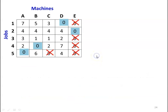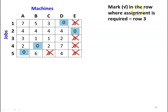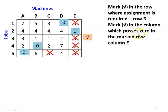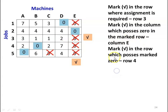Now we go to the next iteration. We repeat the matrix. Mark a tick in row 3 where assignment is required. Mark a tick in column E which possesses a zero in the marked row. Mark a tick in row 4 which possesses the marked zero. So all 3 values — row 3, column E, and row 4 — are marked.